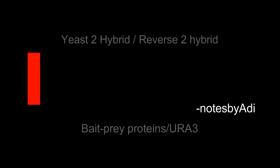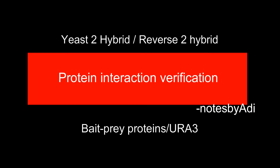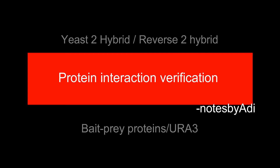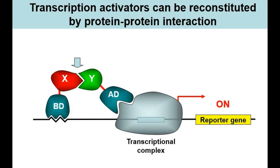The yeast two-hybrid system tries to prove that a protein interacts with another protein, given the expression of a particular gene, which will only happen as an indirect result of these proteins interacting with each other. You create your protein X and protein Y — one is called a bait protein, the other one is called a prey protein.